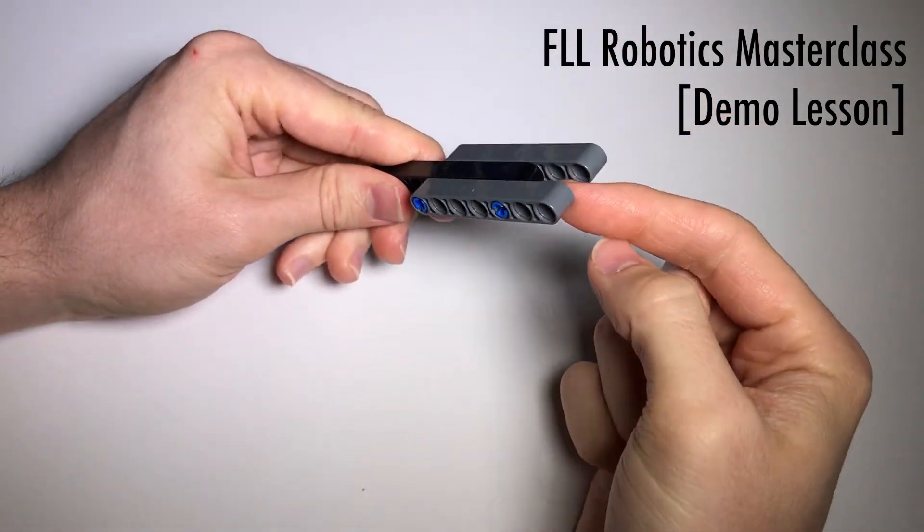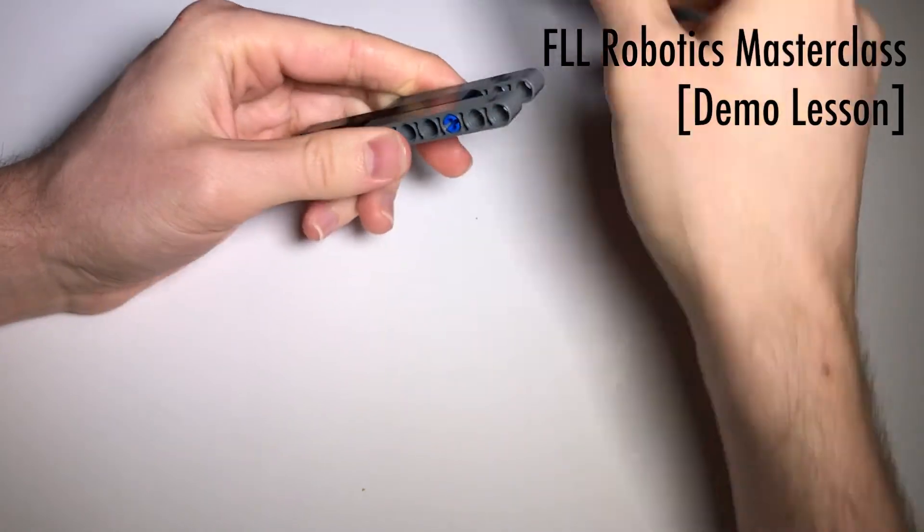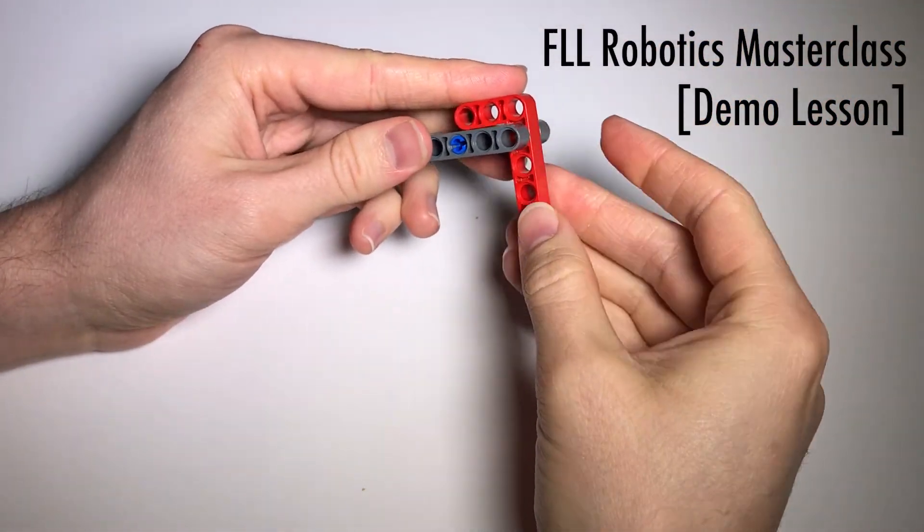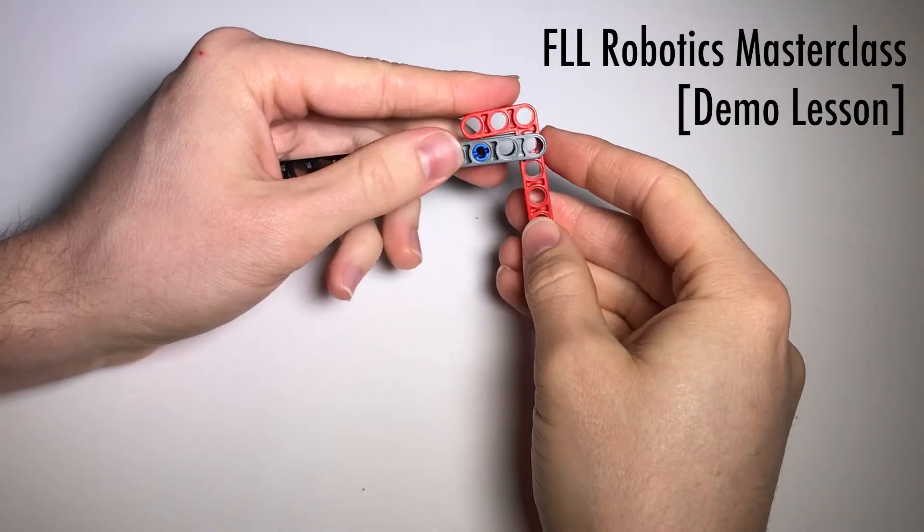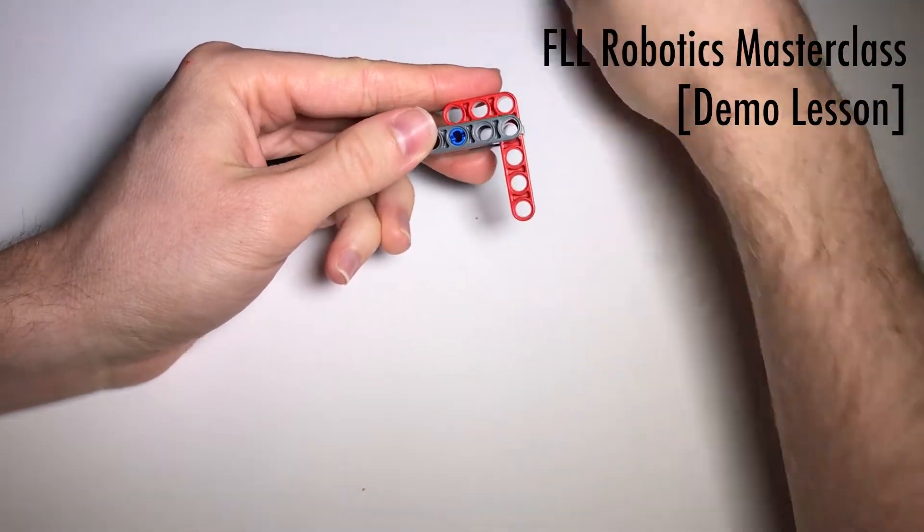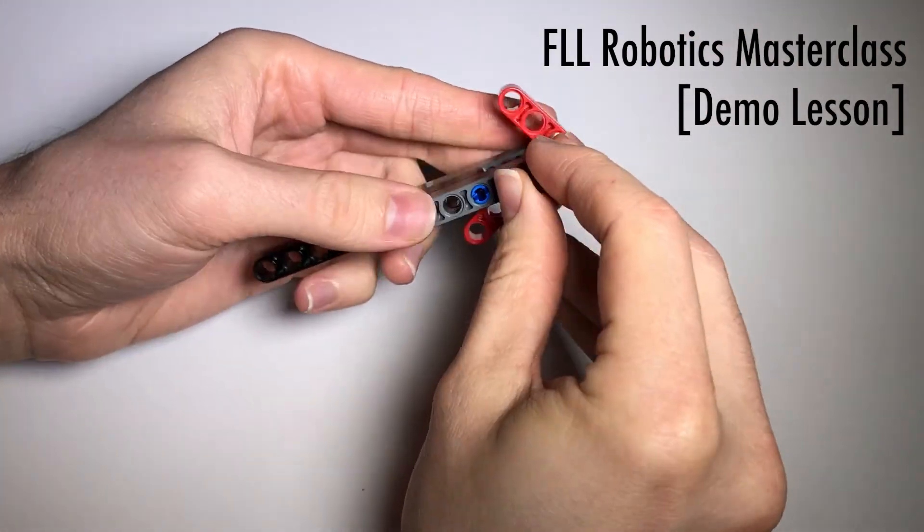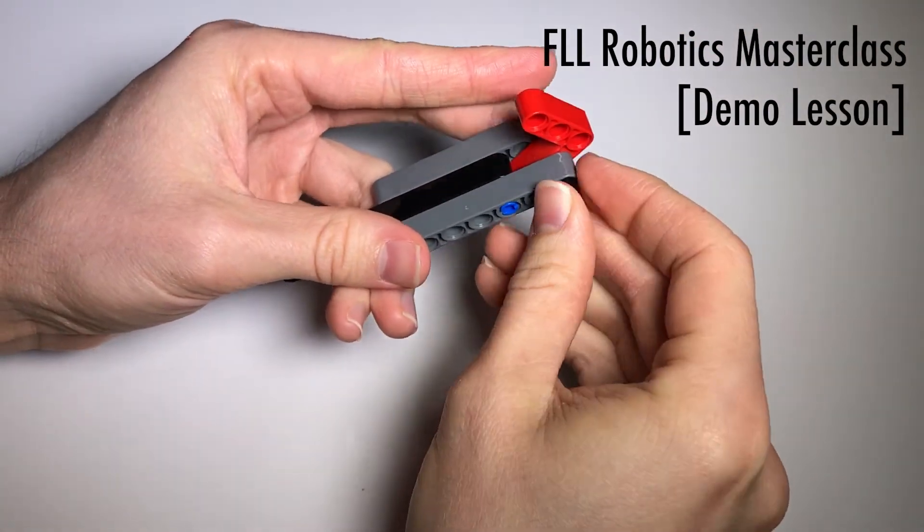And then I will push them all the way through so that I can attach these beams on either side, creating this little notch here. And into said notch I will place this three-by-five angled beam, and then I will spear through it with an axle so that this beam can pivot inside of the notch.